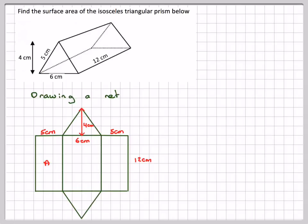Right, if you label that one A, B, C, D, E, and work out the area of them separately and add them together, you'll get what's known as the surface area.